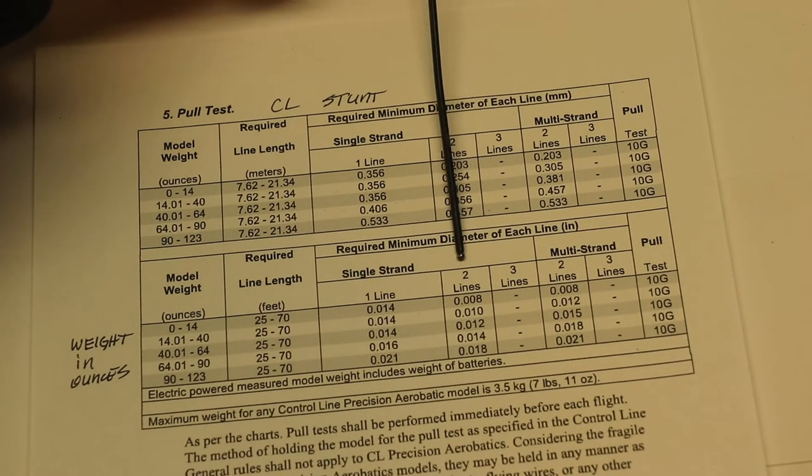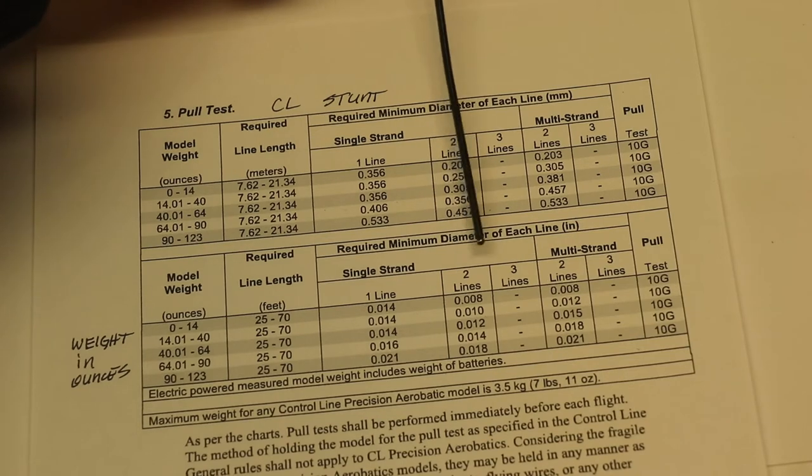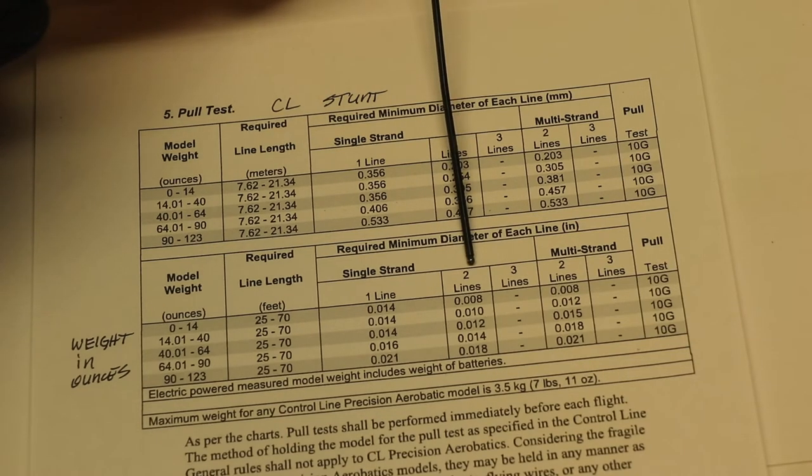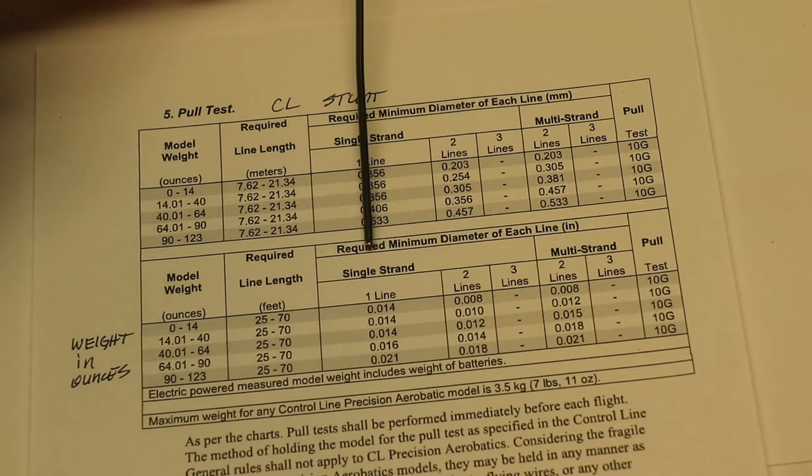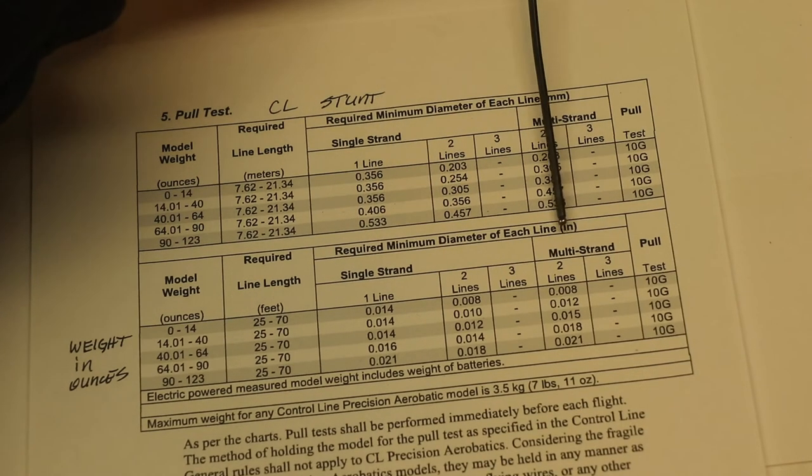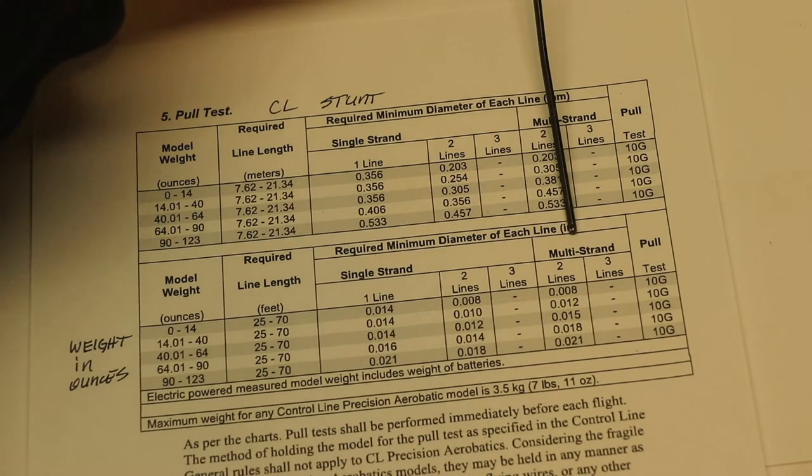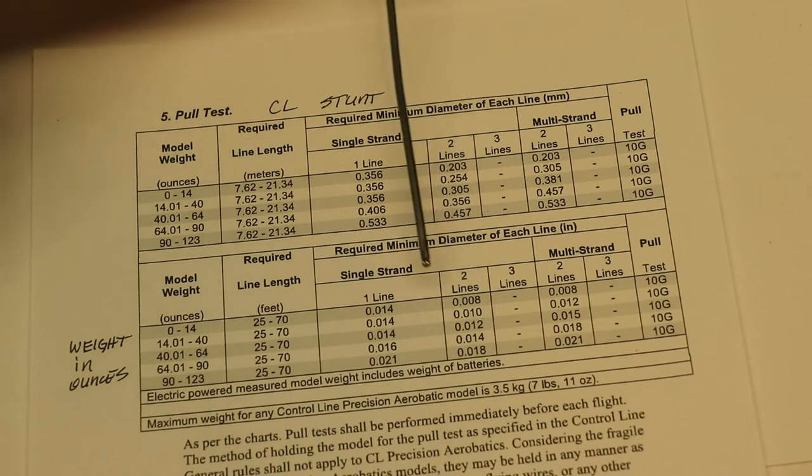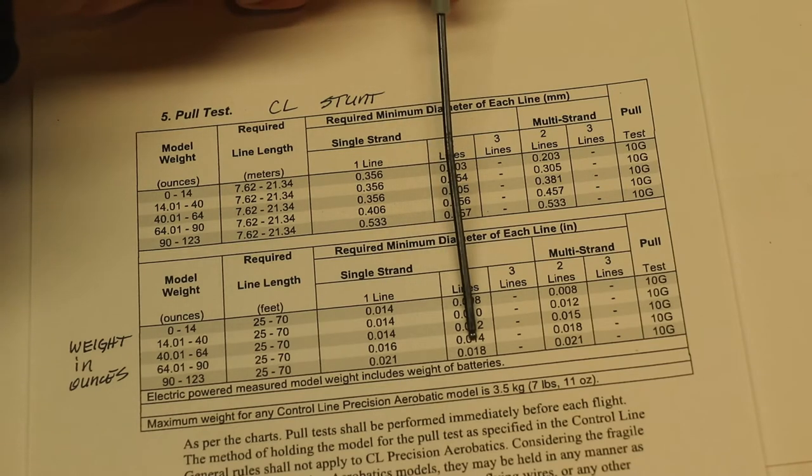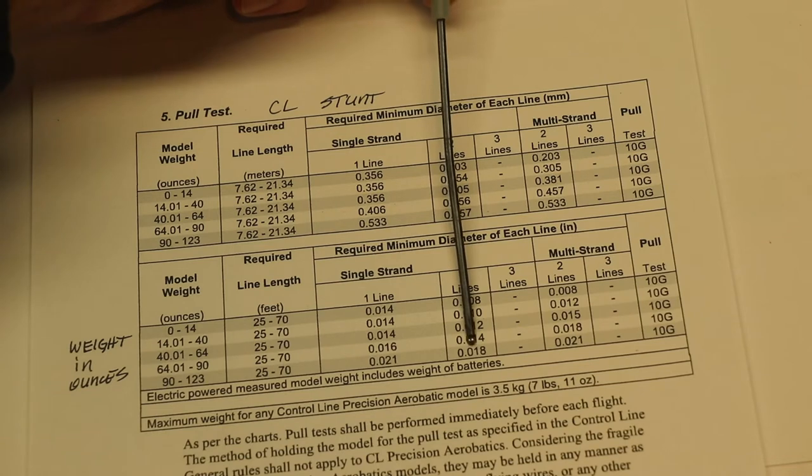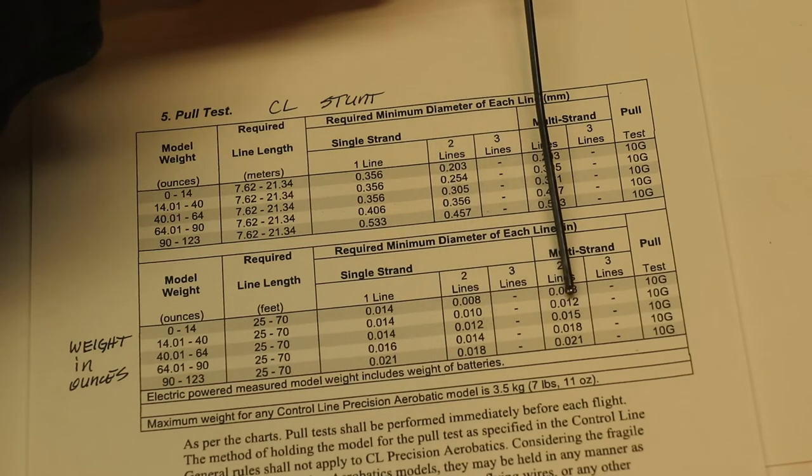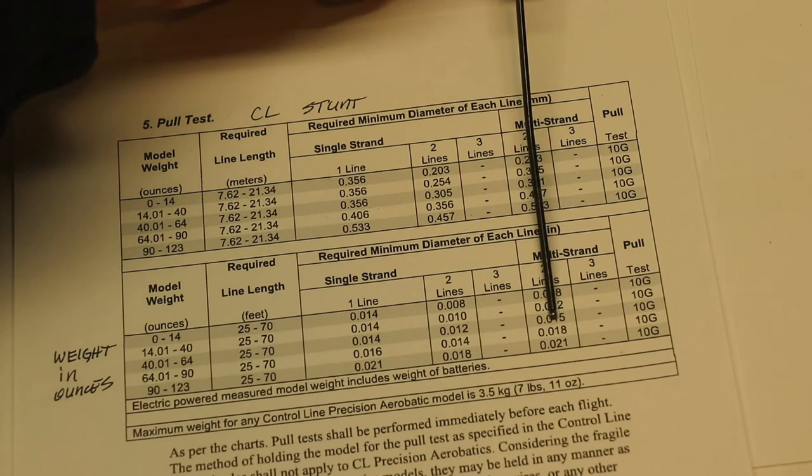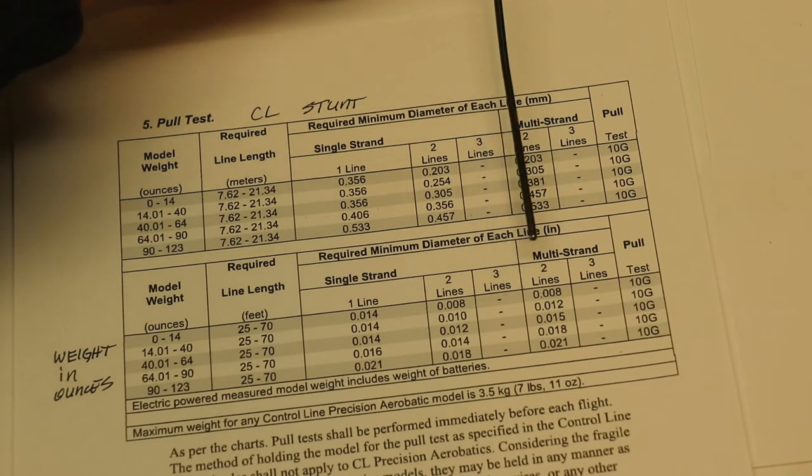If you have two lines just a standard handle you would fly with this. Now this is a single strand which is a solid. Multi-strand is braided and so you'll notice that if you're flying with solids you can fly with 0.014 solids if it's between 64 and 90 ounces but you have to go up to an 0.018 diameter if you're flying braided.